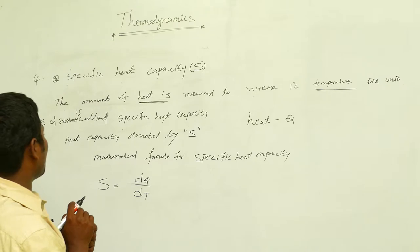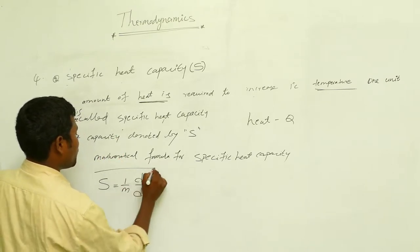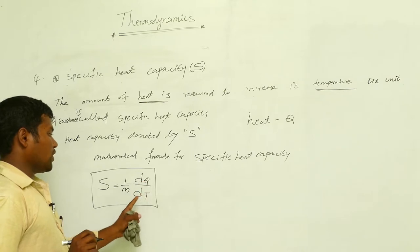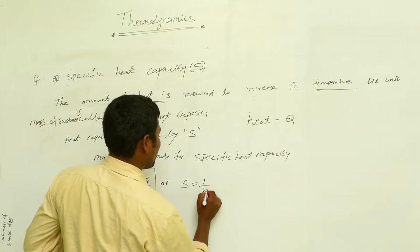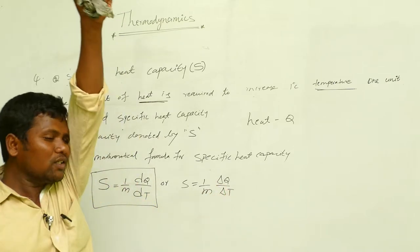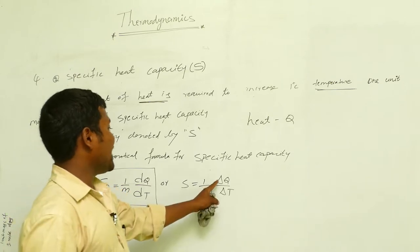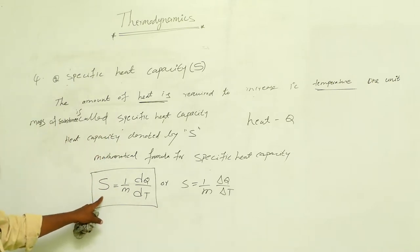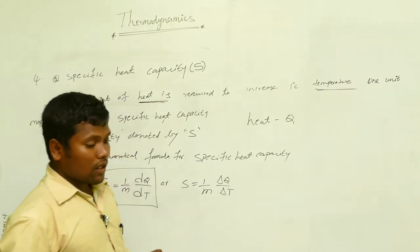Since specific heat involves one unit of mass, we add one extra term. The formula for specific heat capacity is: S = (1/m) × dQ/dT. Here, delta means change — change in heat over change in temperature. So the final formula for specific heat capacity is S = (1/m) dQ/dT.